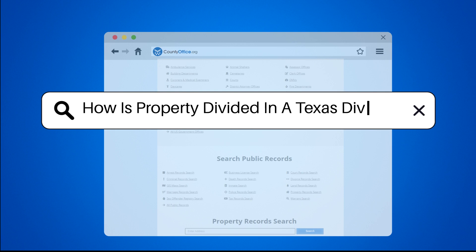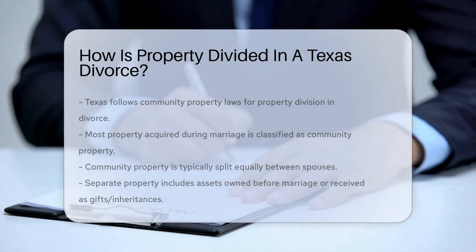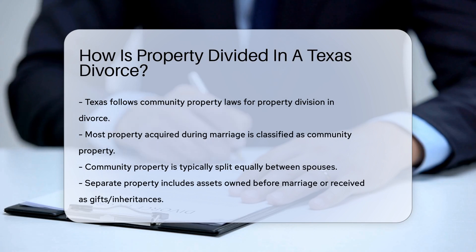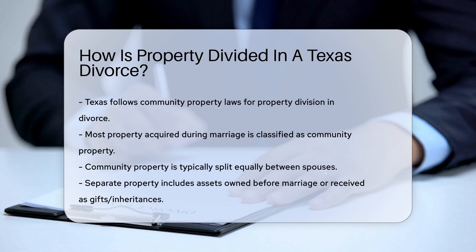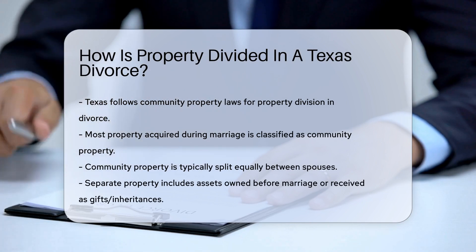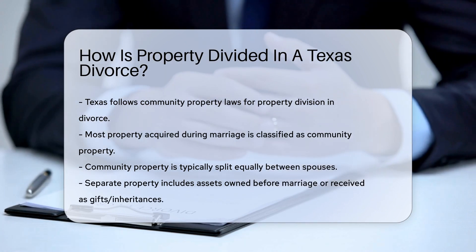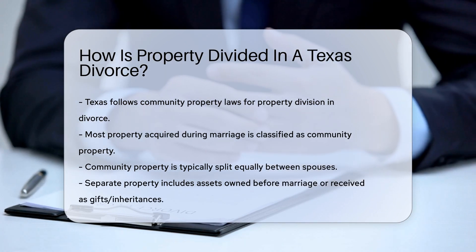How is property divided in a Texas divorce? In Texas, property division during a divorce follows community property laws. This means that most property acquired during the marriage is considered community property.